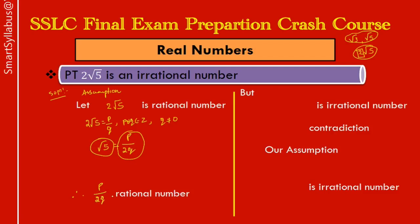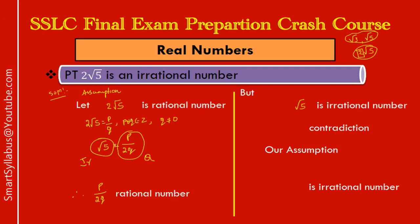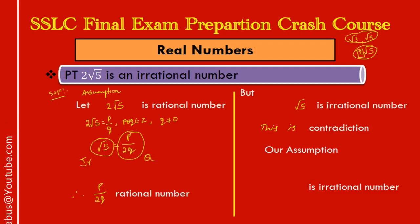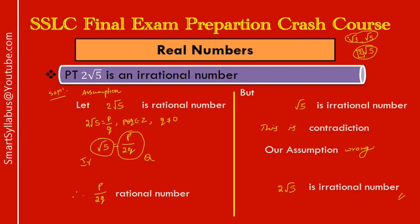So p/(2q) is a rational number. But we know root 5 is an irrational number. We have root 5 equal to a rational number — a rational number being equal to an irrational number means something is not matching. This is called a contradiction. Why did this contradiction arise? Because we assumed 2√5 is a rational number. Since our assumption is wrong, 2√5 is an irrational number. This method is easier than the pure monomial proof.